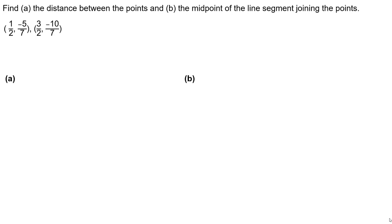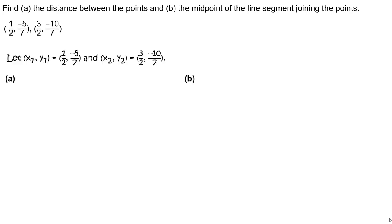Find part a, the distance between the points, and part b, the midpoint of the line segment joining the points. The points are 1 half, negative 5 sevenths, and 3 halves, negative 10 sevenths.